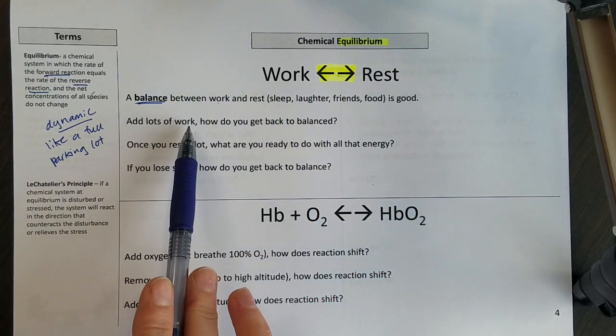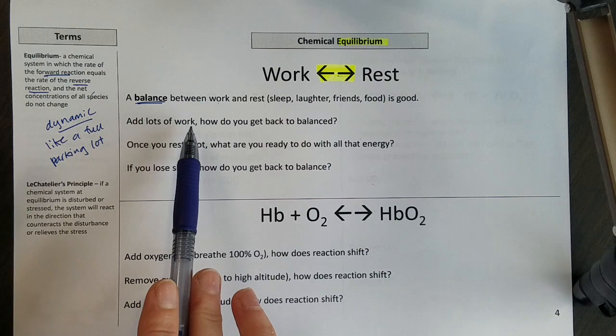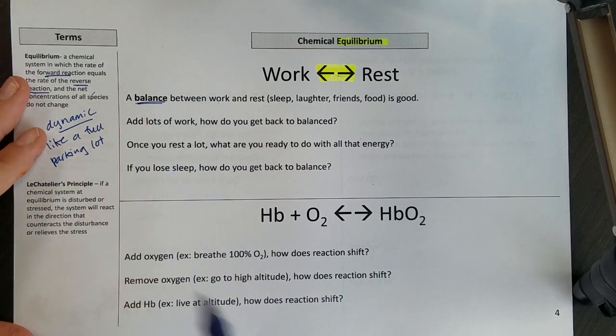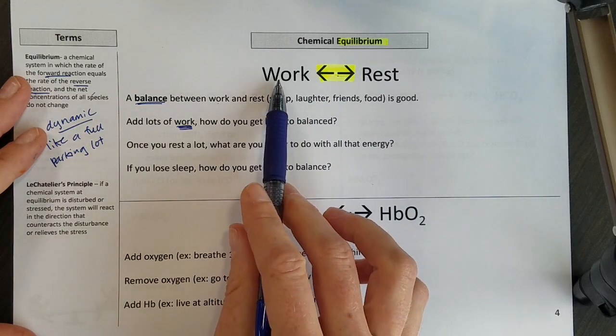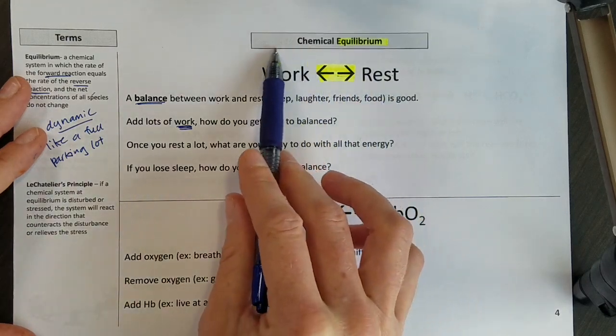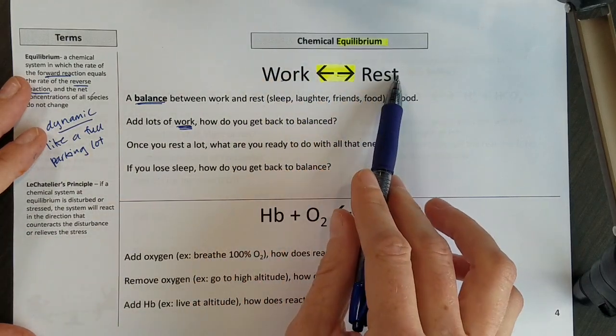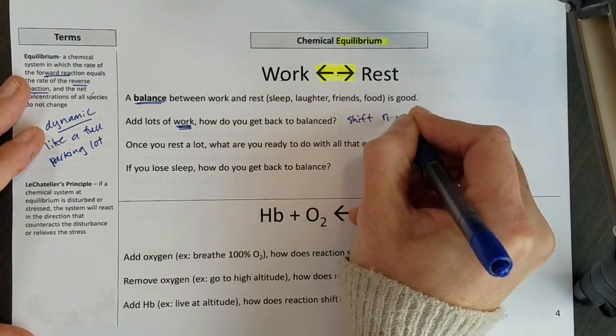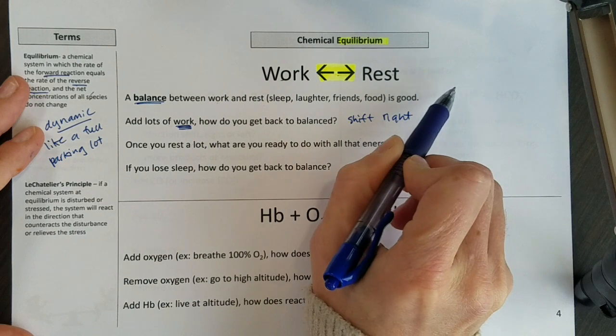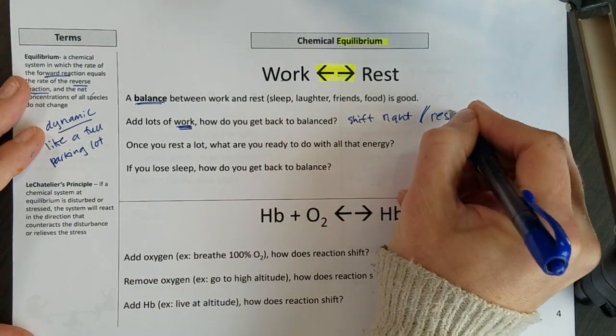So if I take on a lot of work—school, job, family, whatever—if I've been working a lot, then to get back to balance in my life, I need to go rest. Doing a lot of work, I need to go compensate by resting. And I could say that I need to shift right, I need to move this way, or I need to rest.